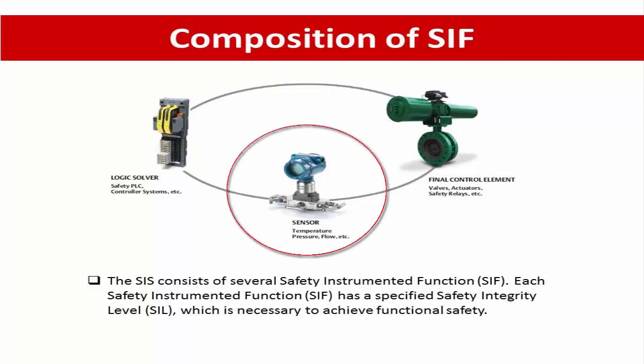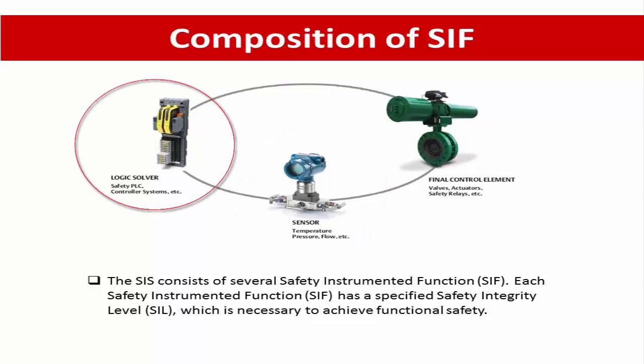A SIF is composed of three elements. The first is the sensor. Sensors are used to collect information necessary to determine if an emergency situation exists. The purpose of a sensor is to measure process parameters such as temperature, pressure, flow, level, or similar, to determine if equipment or process conditions have gone out of bounds. Sensors range from simple pneumatic or electrical switches to smart transmitters with on-board diagnostics.